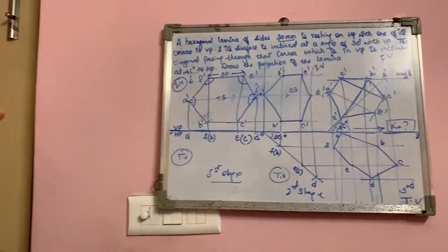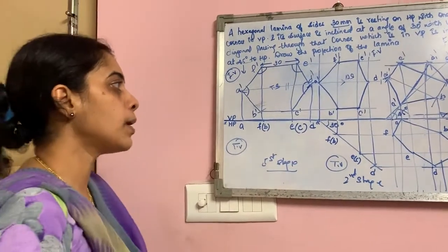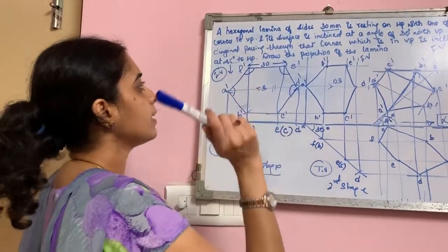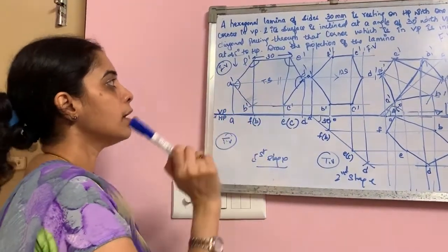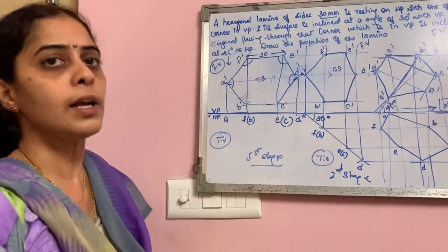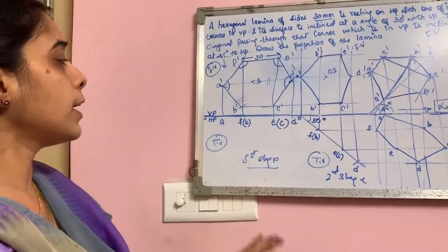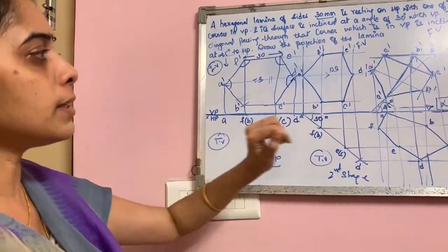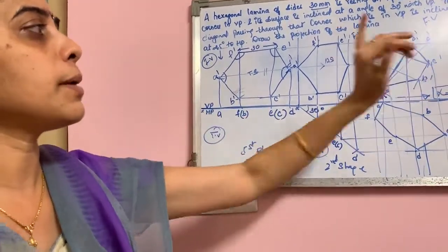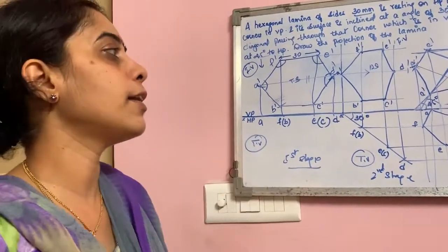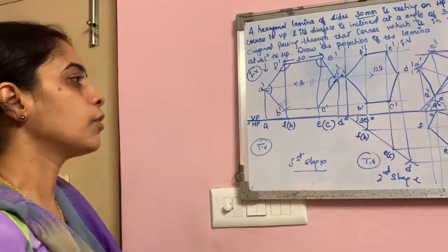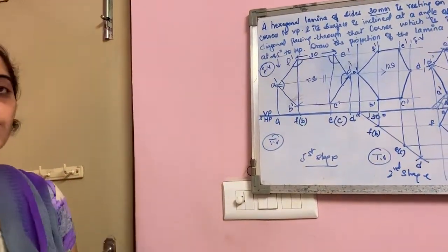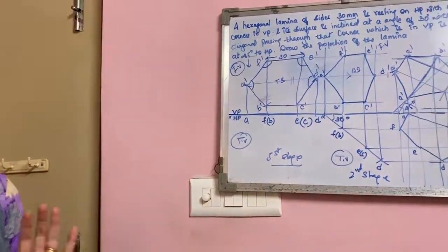Whenever it is a problem on the bisector method and it is told directly inclined to HP related to the position on VP, you have to determine the apparent angle alpha. This is how we solve this problem. Thank you.